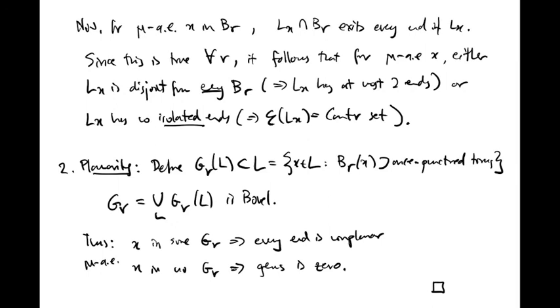Next, let's discuss planarity. Define g sub r of L to be the set of points x in the leaf L for which the ball of radius r around x contains a once punctured torus. Then define g sub r to be the union of g sub r of L over all L. Evidently, this is Borel because it only depends on the topology of leaves on a fixed scale. Therefore, by the proposition fundamental, for mu almost all x, either x is contained in some g sub r, which implies that every end of the leaf L sub x is non-planar, or x is contained in no gr, which implies that the genus of its leaf is zero. This concludes the proof of Gise's theorem.